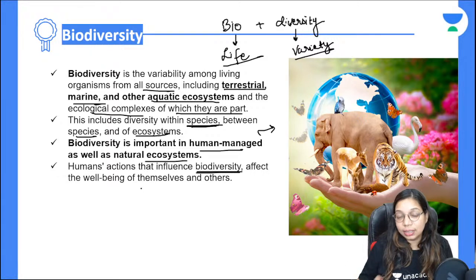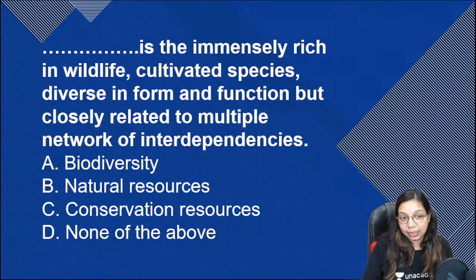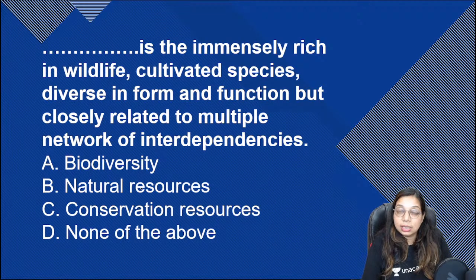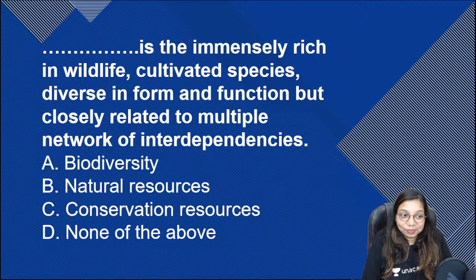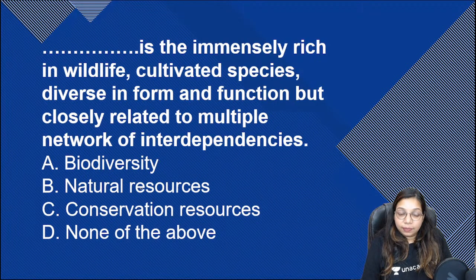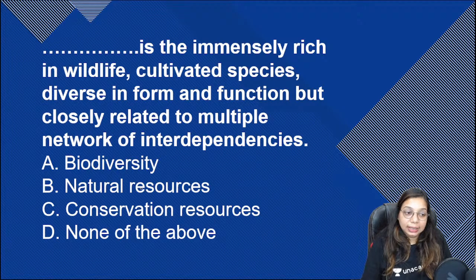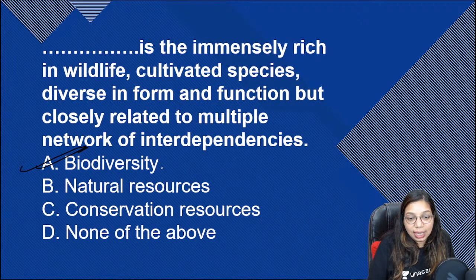A very large ecosystem is called a biome. The answer to the fill-in-the-blank — 'Dash is immensely rich in wildlife, cultivated species, diverse in form and function but closely related through a multiple network of interdependencies' — is biodiversity. Yes, we are talking about biodiversity.